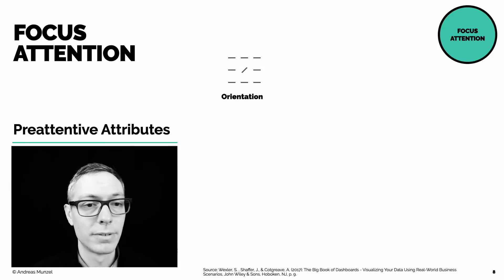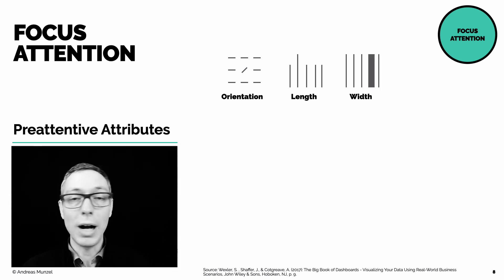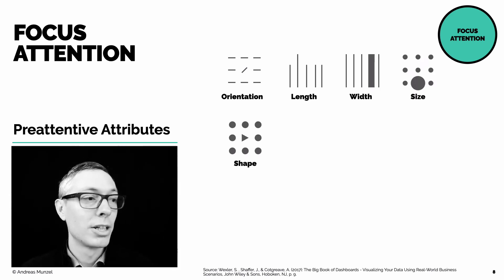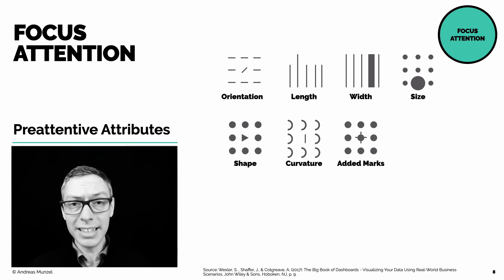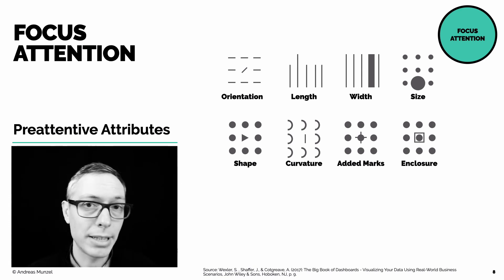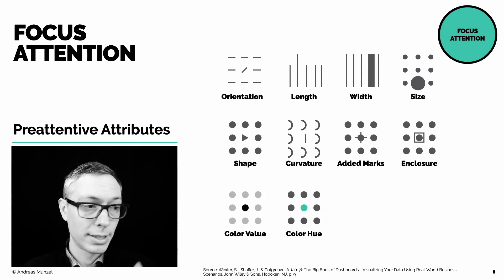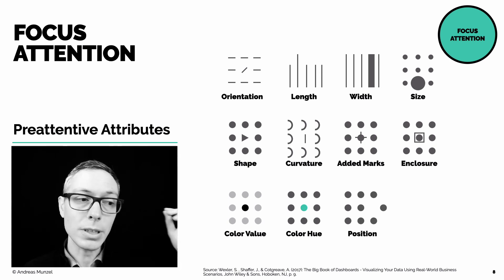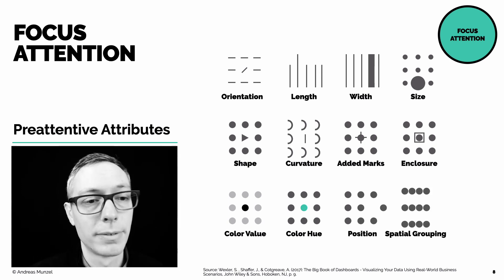The 12 commonly used pre-attentive attributes are: orientation, length, width, size, shape, curvature, added marks, enclosure, color hue, color value, color intensity, position, and finally spatial grouping.